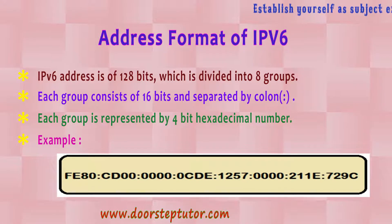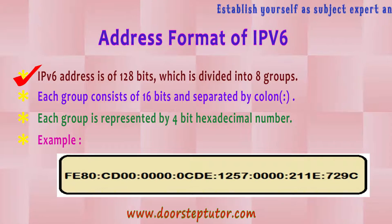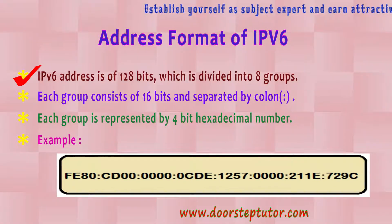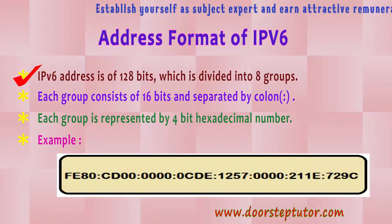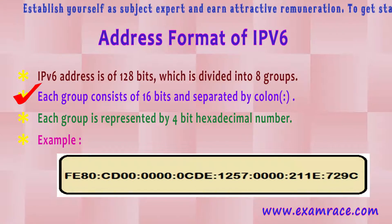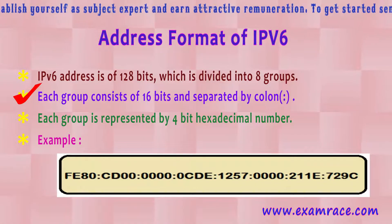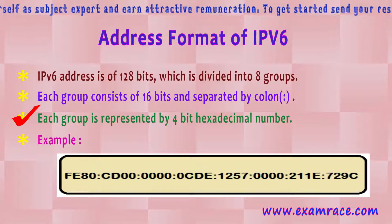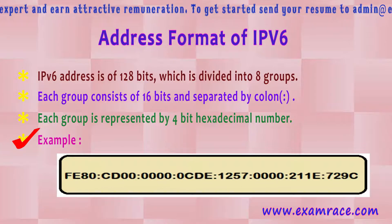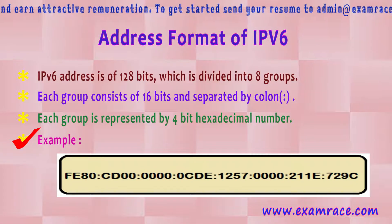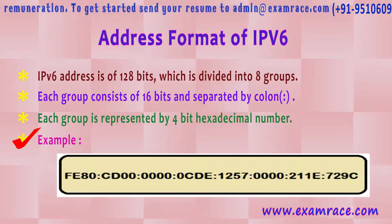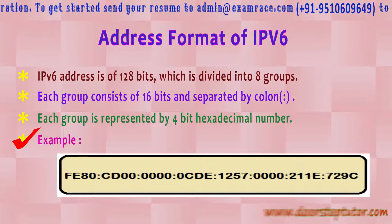Let's move to the address format of IPv6. An IPv6 address is 128 bits instead of 32 bits as in IPv4. It is divided into 8 groups instead of 4 groups. Each group consists of 16 bits and these are separated by colons instead of dots. Each group is represented by a 4-bit hexadecimal number. Here is an example shown in this slide, where we can easily distinguish the 8 groups separated by colons.